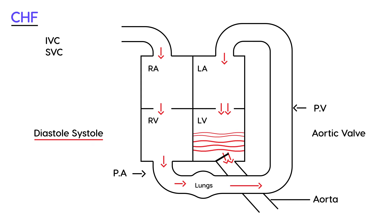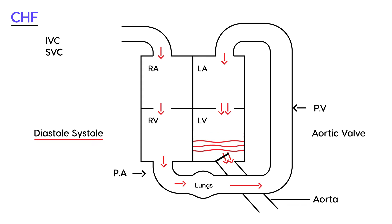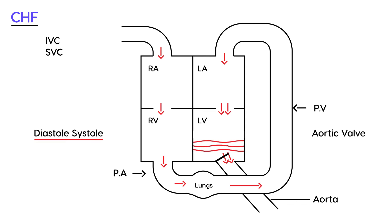As blood starts going into the aorta, it starts disappearing from the left ventricle, and this cycle just keeps going on and on.